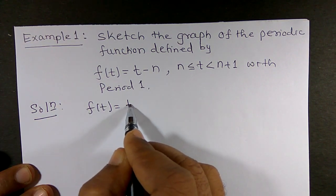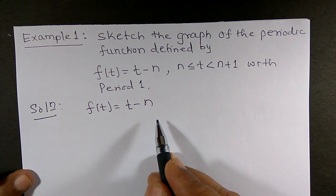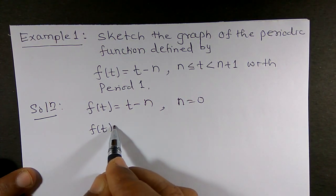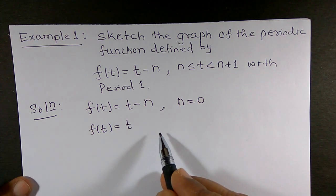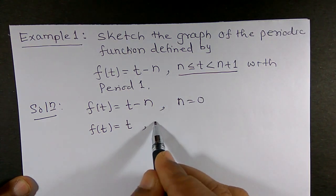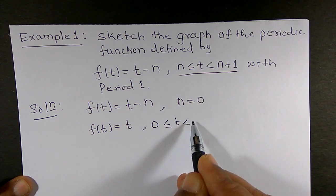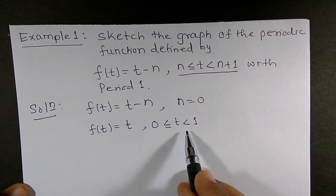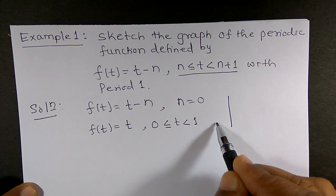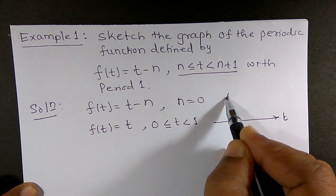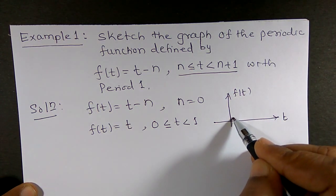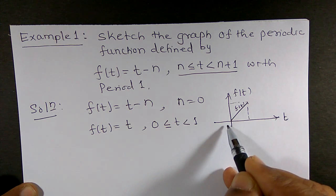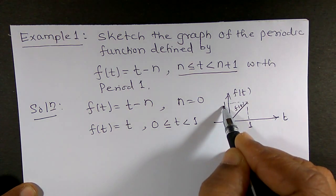The given function is f(t) = t − n. Taking n = 0, the interval becomes 0 ≤ t < 1, so f(t) = t on [0, 1). When we draw the graph, with the t axis and f(t) axis, we get a line from (0, 0) to (1, 1) in this interval.